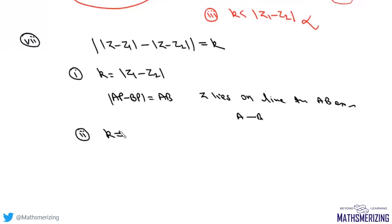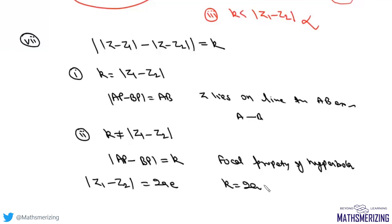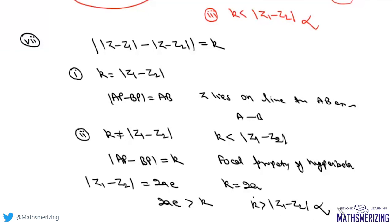If k is not equal to |z₁ - z₂|, we get |AP - BP| = k, which is the focal property of a hyperbola. The distance between the foci is |z₁ - z₂| = 2ae, and the transverse axis is 2a. Since for a hyperbola e is greater than 1, we need 2ae > 2a, so k must be less than |z₁ - z₂|. If k is greater than |z₁ - z₂|, it won't represent any locus.